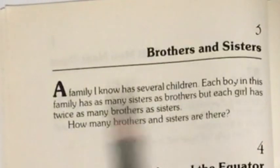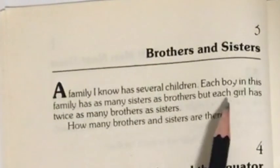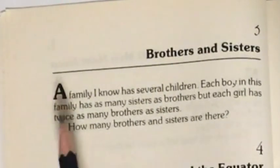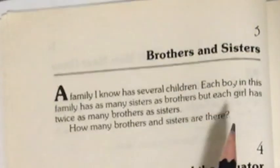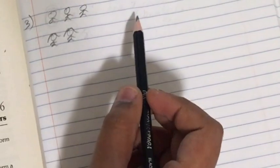So now that we're done with the first part, let's look at the second part. Each girl has twice as many brothers as sisters. So if we look at this girl's perspective,